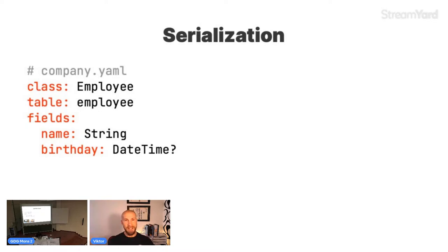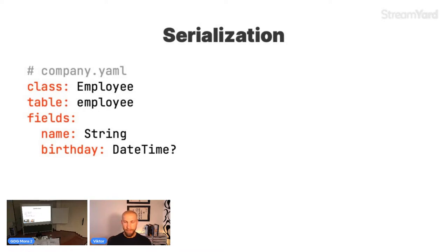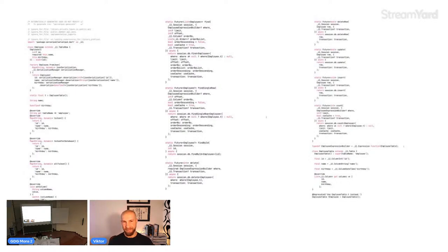Serialization in Serverpod is built around simple YAML files. For example, a file called employee.yaml would define the class name as 'employee', connect it to a database table called 'employee', and list its fields — like the employee's name and birthday — using Dart types. Serverpod figures out how to serialize things to the database and how to handle serialization when passing data to the client or app. From that YAML file it generates all the code you need — all the boilerplate you would otherwise have to write yourself.